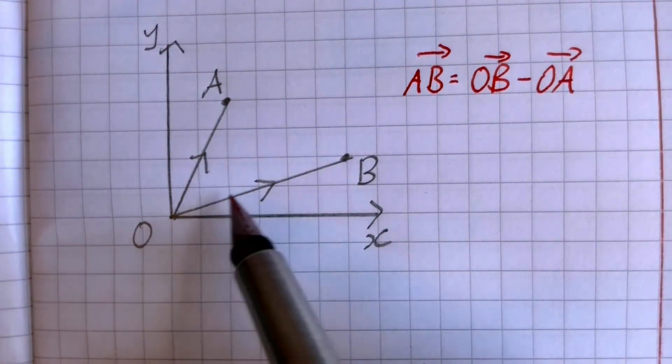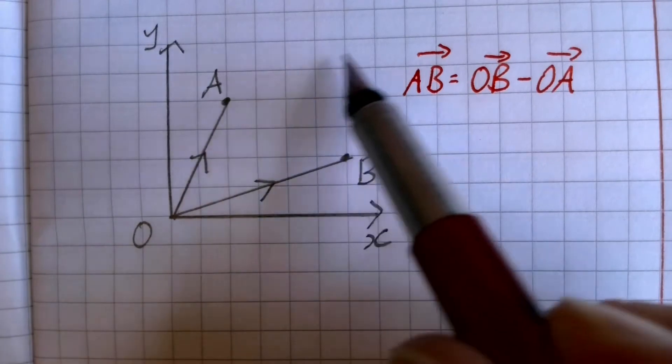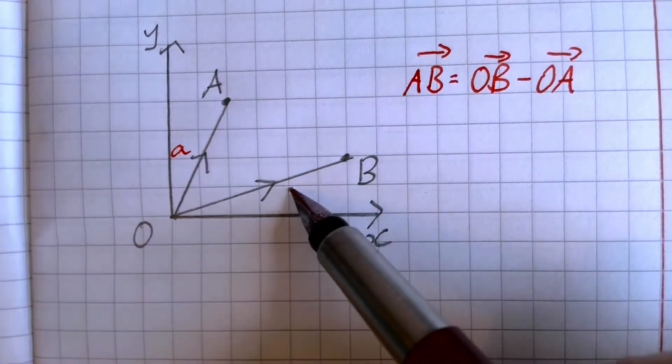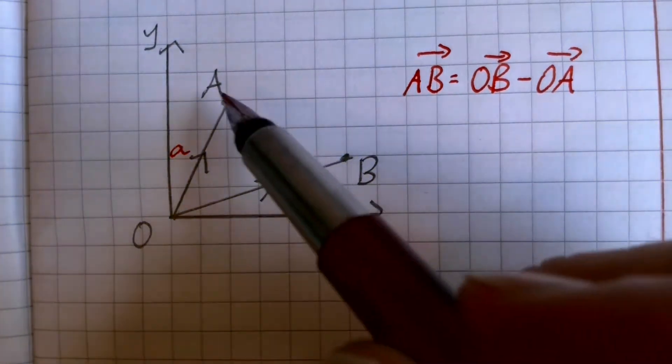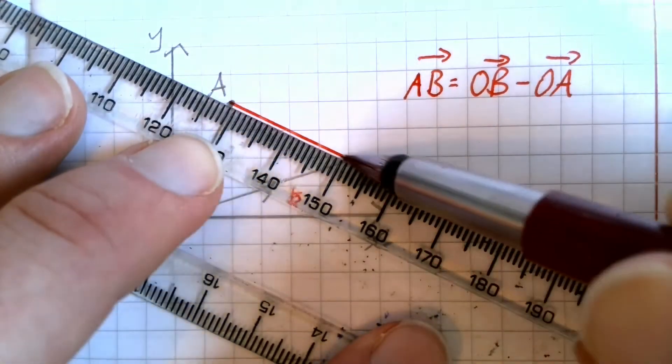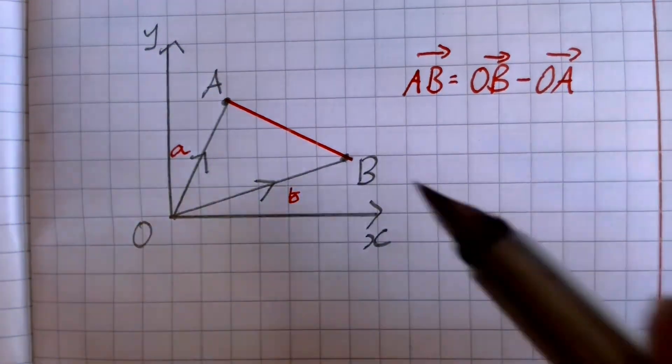If I was to do that vector from A, and then do the negative of A, because that's A, that's B, then that would give me the same vector that would take me from A to B.